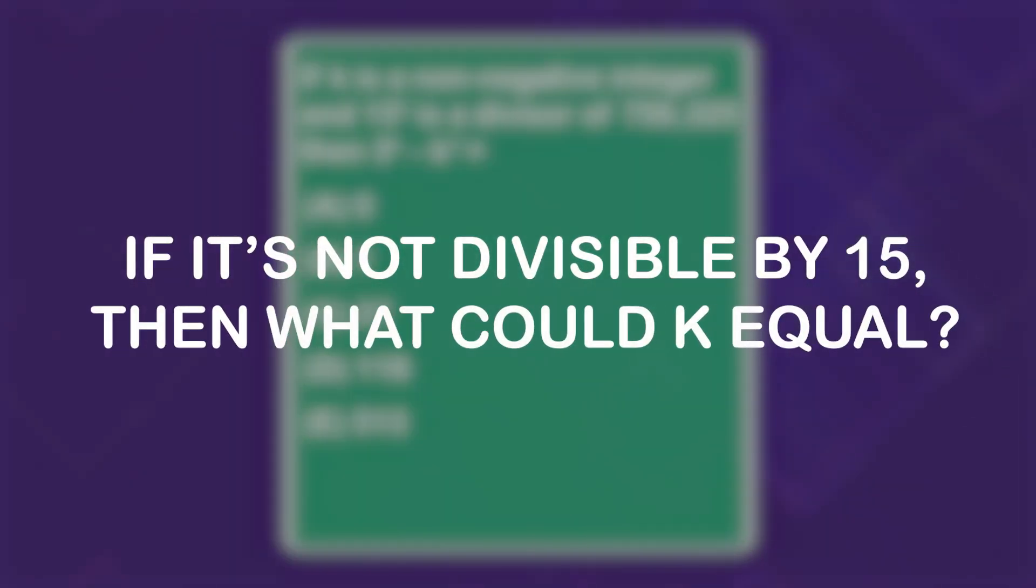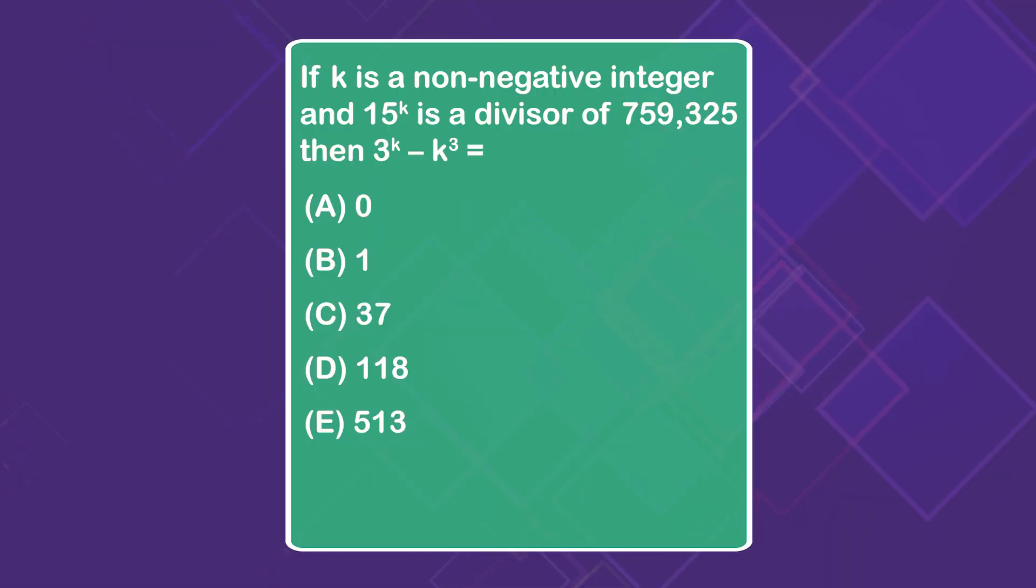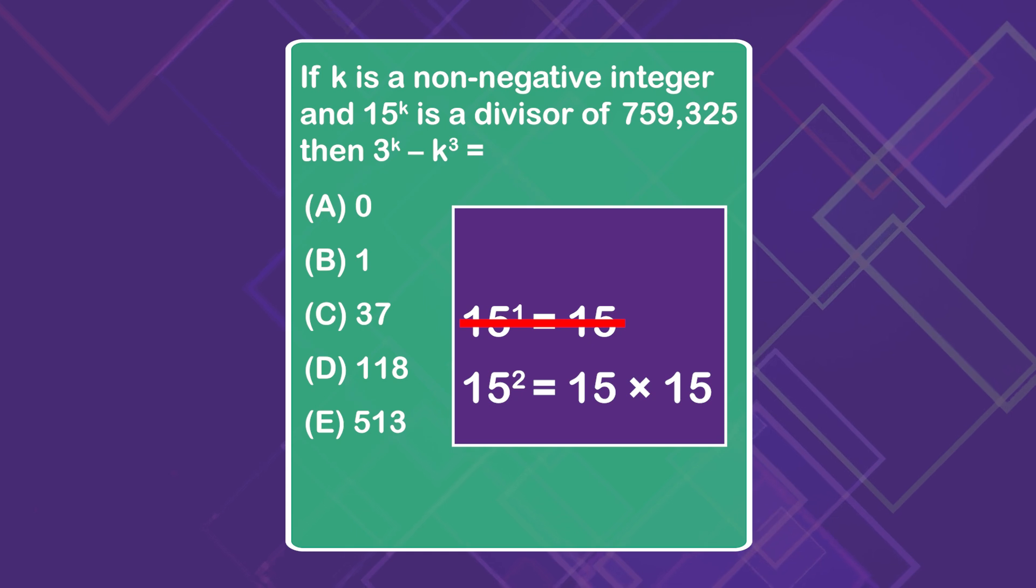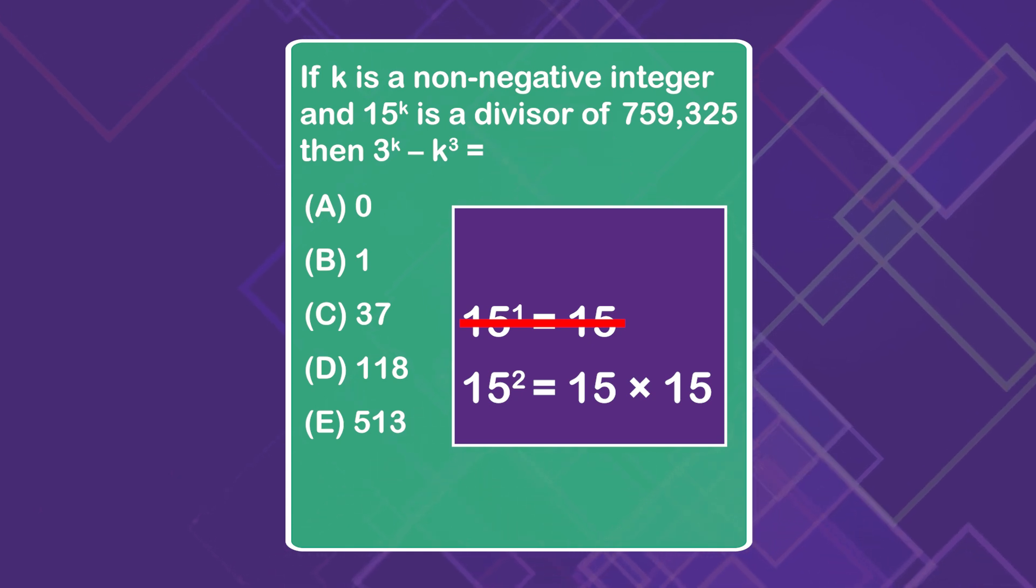So the question is, if that number is not divisible by 15, then what could k equal? We need to find a value of k so that it is divisible by 15 to the k power. Well, 15 to the first power, if k equals 1, is 15 and it can't be divisible by that. 15 to any other power bigger than 1 is going to be 15 times more copies of 15. That's not going to work.